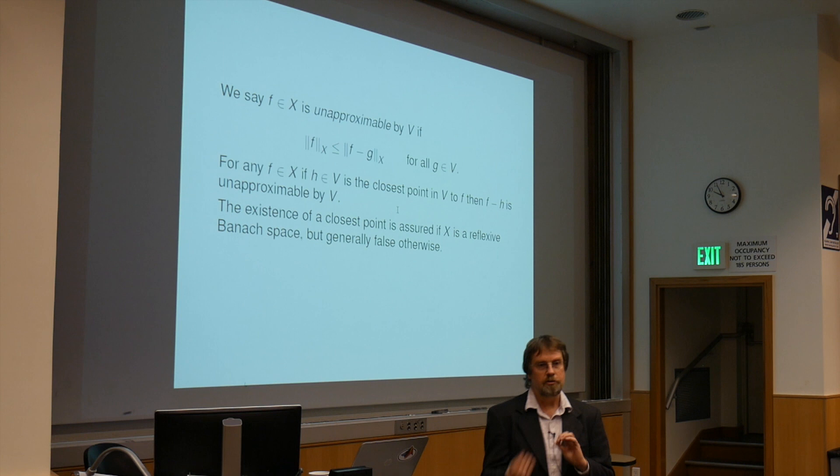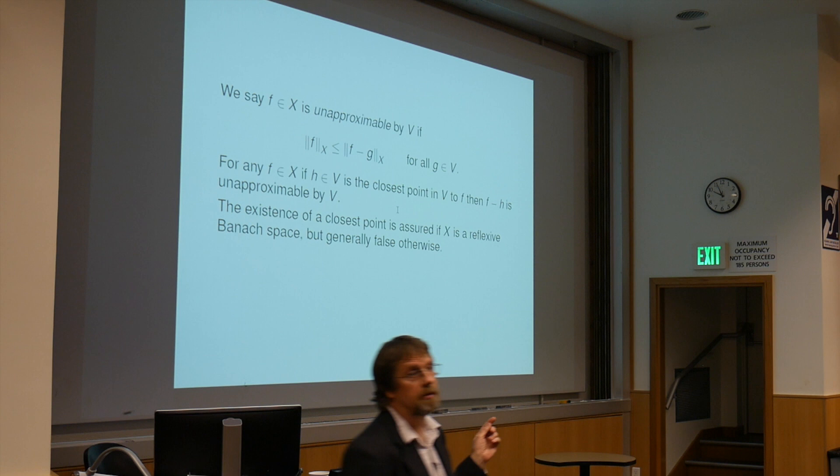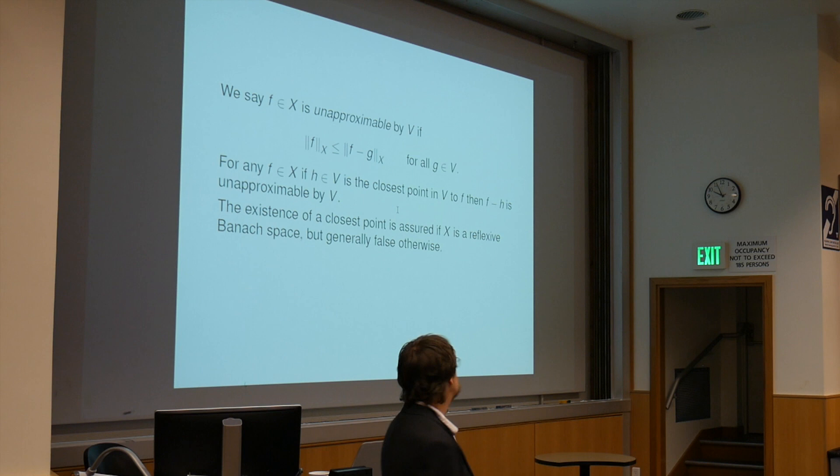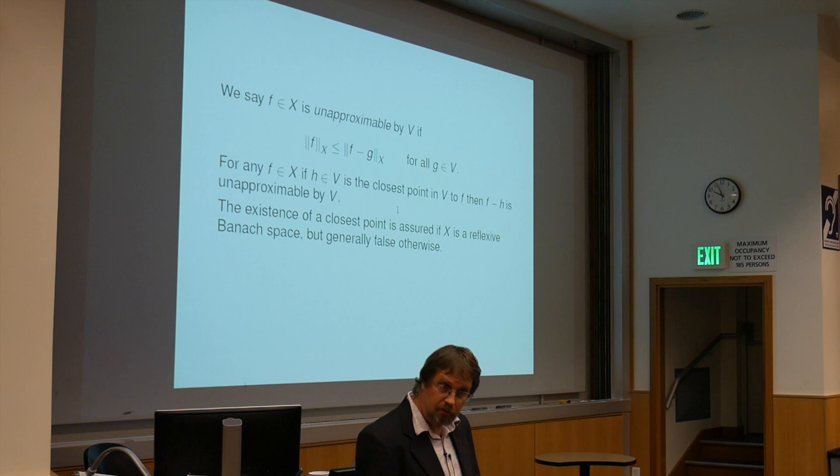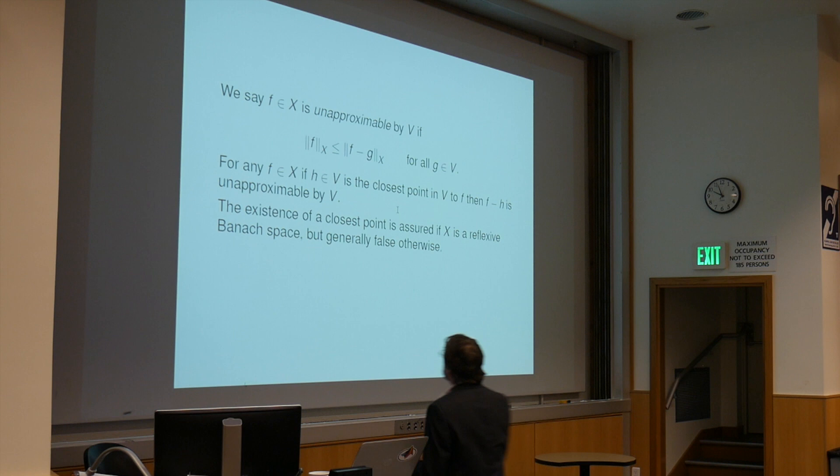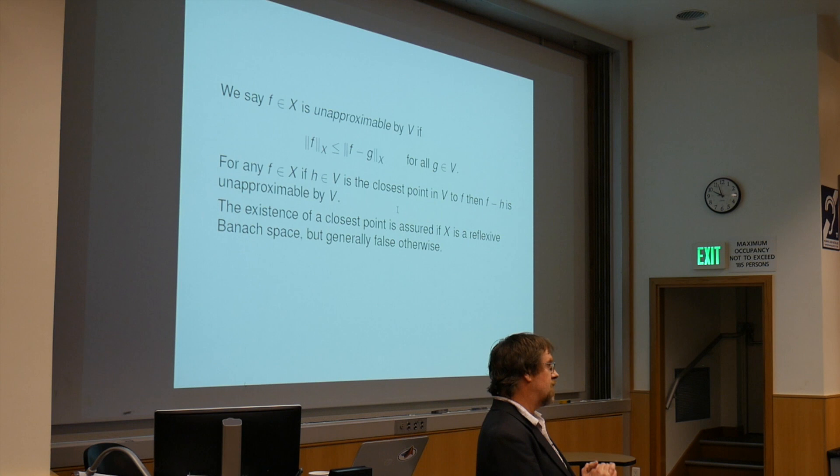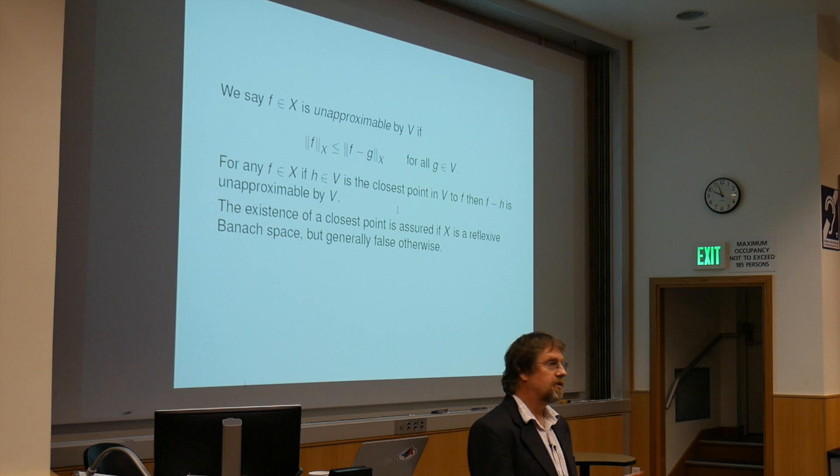Now there are still going to be things you can't approximate, in the sense that the norm in the big space is not reduced by trying to approximate it by any non-zero thing out of our approximating subspace. For example, if we can find the closest point in our subspace, call it h, to our original function f, then f minus h is an unapproximable function because you can't do any better than that. Existence of closest points is guaranteed if our big space is a reflexive space or if the subspace is finite-dimensional. But in our case, ridge functions are not finite-dimensional, they're infinite-dimensional. So we don't necessarily have a guarantee that there is a closest point.